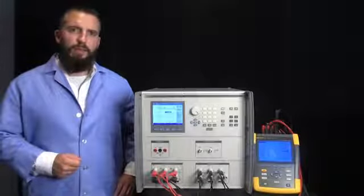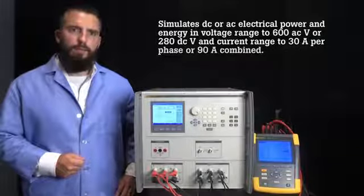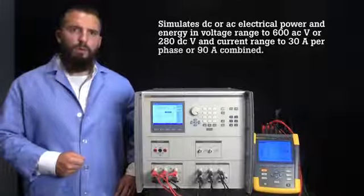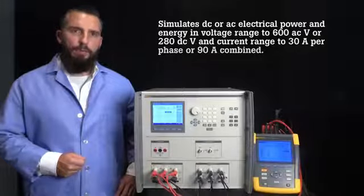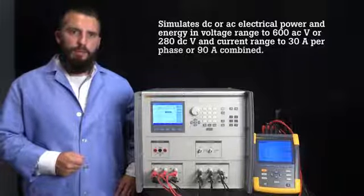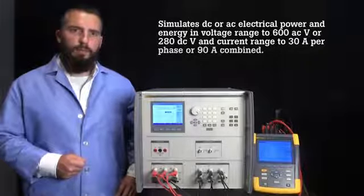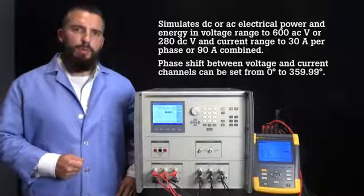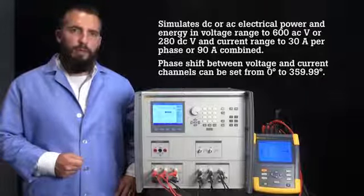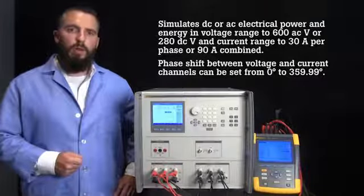The 6003A simulates DC or AC electrical power and energy in voltage ranges from 1 volt to 600 AC volts or 280 DC volts and current ranges from 8 milliamps to 30 amps per phase or 90 amps combined into one phase. Phase shift between voltage and current channels can be set from 0 degrees to 359.99 degrees with the best accuracy of 0.01 degree.